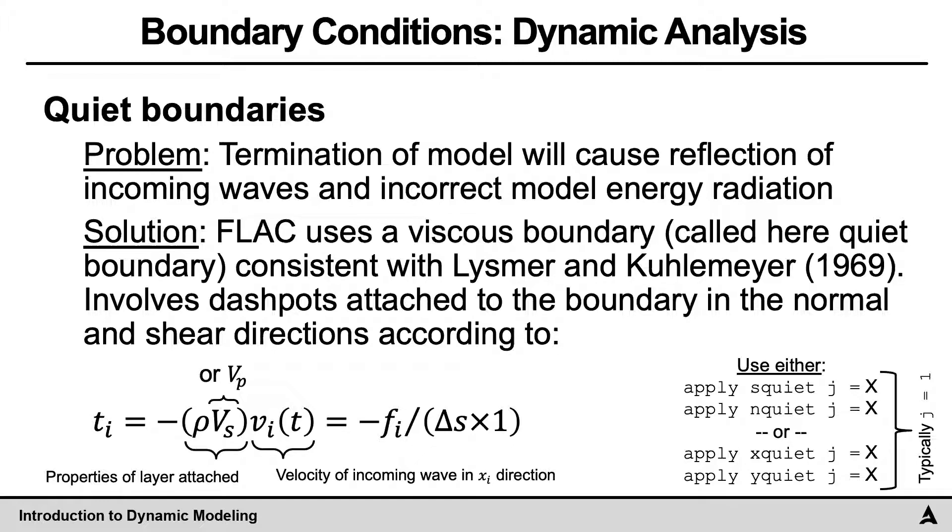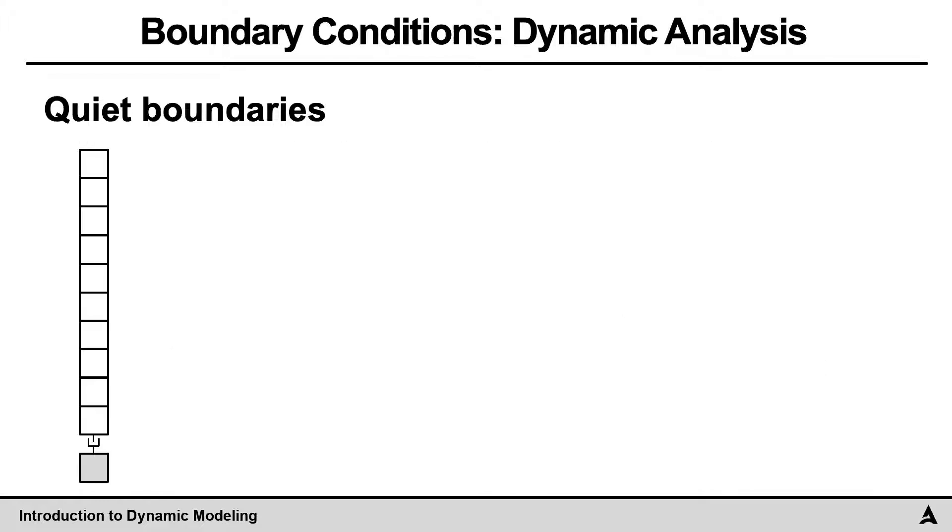The way that we specify this in FLAC is using the commands highlighted on the bottom right - S quiet and N quiet for the shear or normal direction. But in almost all the cases that I've ever done analysis, I have a rectangle, so I commonly use X quiet and Y quiet commands, but I would suspect that the commands on the top would produce the same result as well.